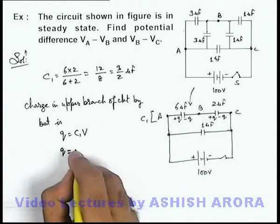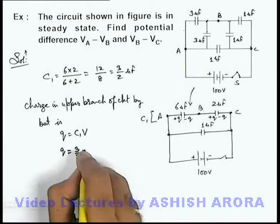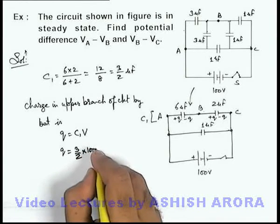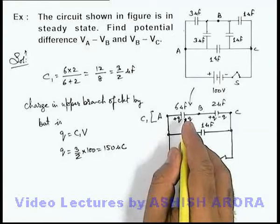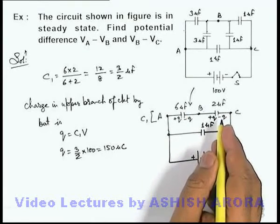So here the charge can be written as 3 by 2 multiplied by 100. That will be 150 microcoulomb, that will be the charge present on 6 and 2 microfarad capacitor.